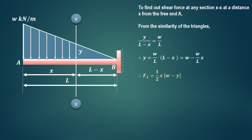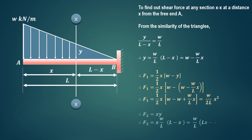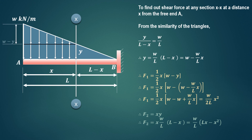The shear force at this section consists of two parts: a triangular distribution (uniformly varying load) and a uniformly distributed load (rectangular distribution). We first concentrate on the triangular distribution. The uniformly varying load is given by one-half times base times height. The base of this triangle is X and its height is W minus Y.